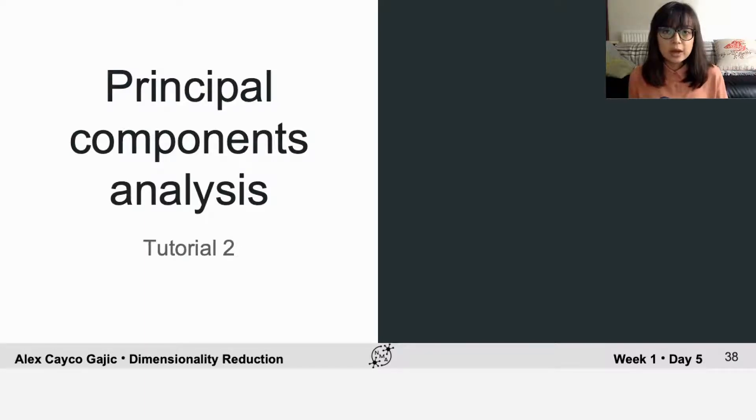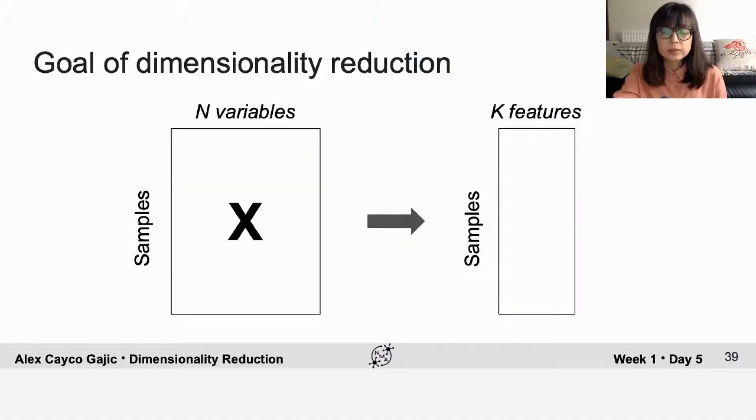In this tutorial we'll use concepts we developed previously to understand how to perform principal component analysis. The goal of dimensionality reduction is to take your original data, which is made of many samples of a large number of variables that you're recording directly, and reduce that to a much smaller number of features that you're not directly observing but inferring in order to capture much of the structure of the original data. The key question for dimensionality reduction techniques is: how do you find these features?